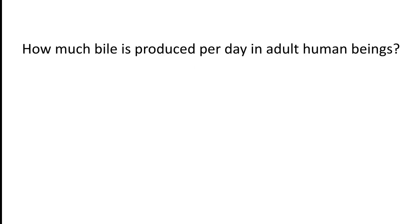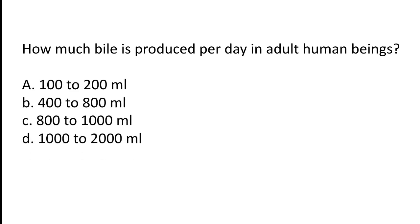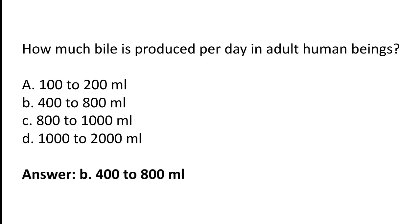How much bile is produced per day in adult human beings? A) 100 to 200 ml, B) 400 to 800 ml, C) 800 to 1000 ml, D) 1000 to 2000 ml. The correct answer is option B — 400 to 800 ml.